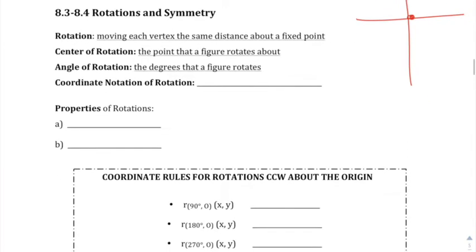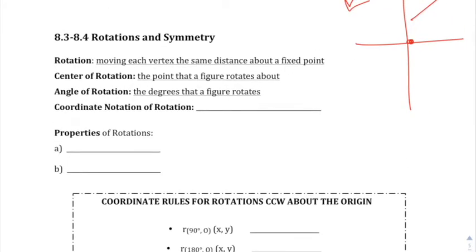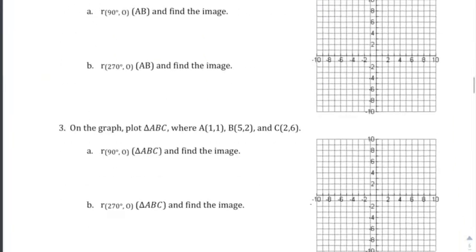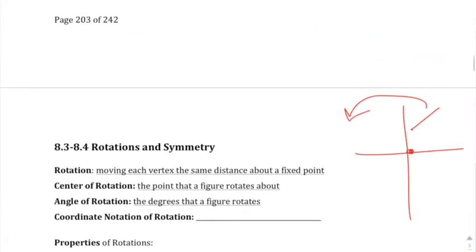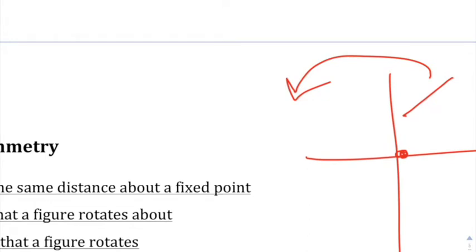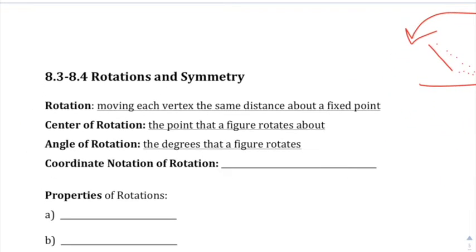Sometimes you can do this around the origin, sometimes around an ordered pair. You've got some constructions you can do rotations around as well. One of the key properties of rotations is that everything, once you rotate it, will be about the same distance from the center of rotation. These points are kind of like the same distance from that center point — that's one of the properties of rotations.